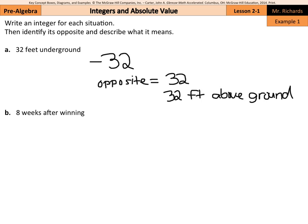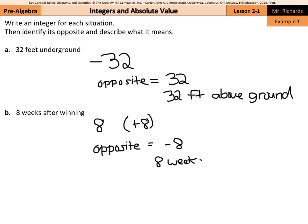Example 1b: eight weeks after winning. One integer to represent this could be eight, and sometimes you'll see this also written as plus eight — either way works. The opposite of positive eight is going to be negative eight. What this could mean: the opposite of eight weeks after winning would be eight weeks before winning.